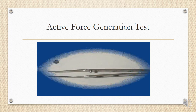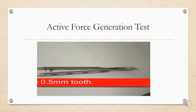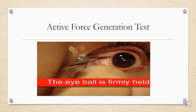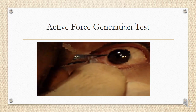In the active force generation test, you hold the globe with tweezers, move it in one direction, and ask the patient to move the eye in the other direction to feel whether muscle force is present. This assesses whether the patient has a paralysis or a restriction. For example, testing the medial rectus: ask the patient to look toward the nose side; if the medial rectus is functioning properly, there is no paralysis. Similarly for the lateral rectus: ask the patient to look to that side. This can be done in all directions of gaze to identify which muscle is paralytic or restricted.